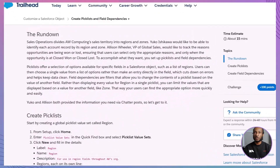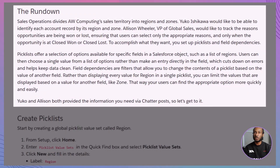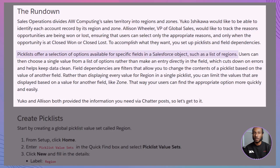Let's set the scene. At AW Computing, sales operations has divided the sales territory into regions and zones. Yuko Ishikawa wants to identify each account by its region and zone, while Alison Wheeler, the VP of Global Sales, needs to track the reasons opportunities are won or lost. Your mission: set up picklists and field dependencies to meet their requirements. Picklists are fantastic for offering a selection of predefined options for specific fields in a Salesforce object, like a list of regions. This helps users choose from standardized values, minimizing errors and keeping your data clean. Field dependencies take it a step further by filtering picklist options based on the value of another field, making data entry quicker and more intuitive.